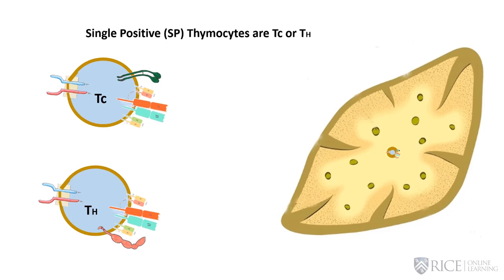We do that by promoting the medullary cells to lay out an antigen buffet for our new thymocytes—laying out a huge variety of different self-proteins as a way of trapping any TC or TH cell that can recognize one of those into apoptosis and elimination. The cells that survive all of this exit to the circulation, and they're not only not going to attack things, they're not going to help upregulate B cells to attack things either.